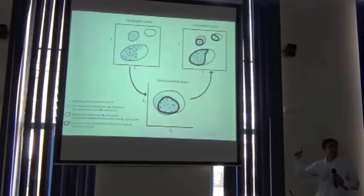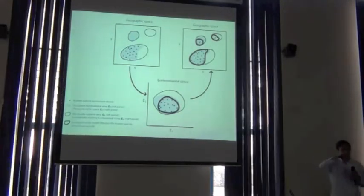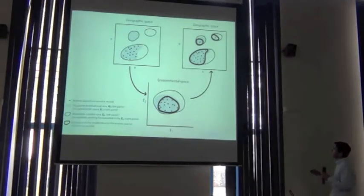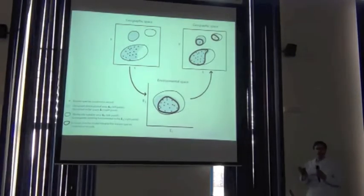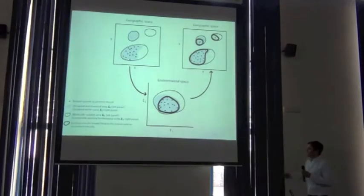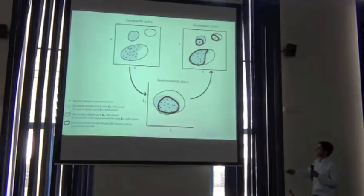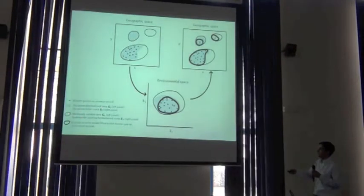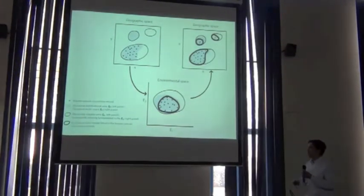Using exactly the same symbols and concepts as on the last slide, but presenting things a little bit differently — this is again exactly the same geographic space, and this is the same environmental space. What are we actually trying to do with the ecological niche models? I'm trying to represent that with this very thick black outline, compared to the thin black outline used on the last slide to define the abiotically suitable area or the fundamental niche.